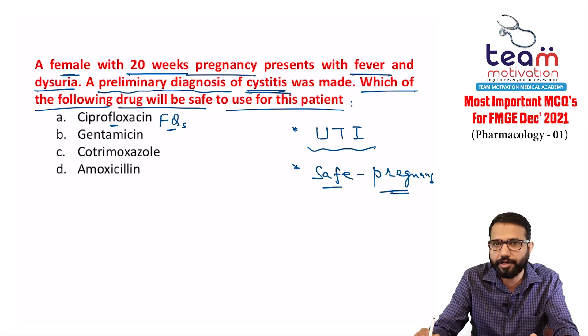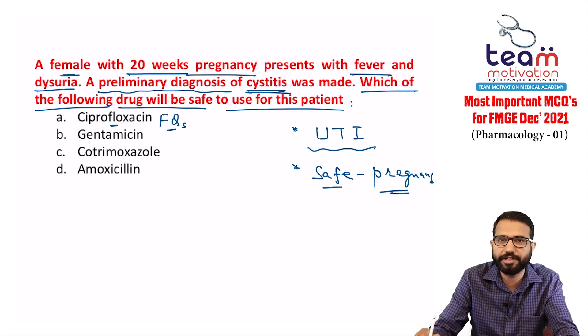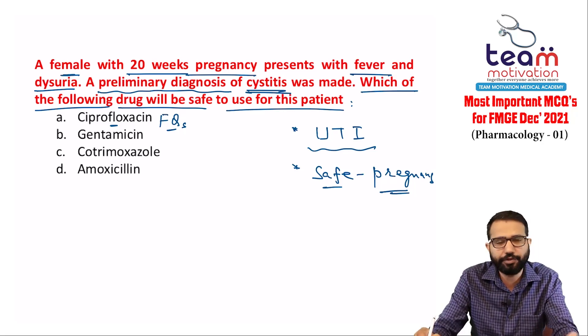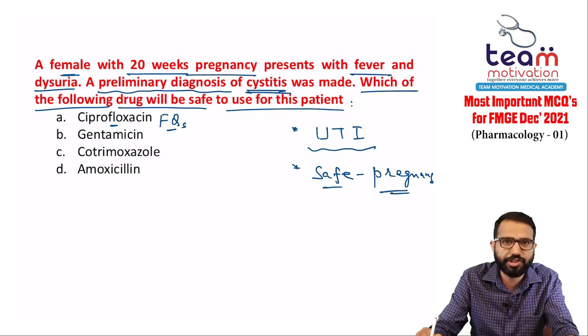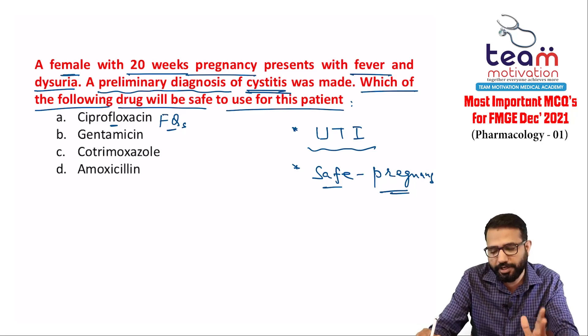Based on preliminary diagnosis, start antibiotics empirically after taking a urine sample for culture and sensitivity. When culture results come, if sensitive continue; if resistant, change the antibiotic. Fluoroquinolones like ciprofloxacin are one of the best drugs for empirical therapy in UTI patients.